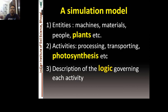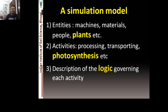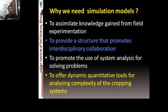What is the simulation model? A simulation model has three different parts. First, entities — these could be machines, materials, tables, plants, etc. Here I have deliberately included a plant because we are going to deal with actual crop systems. Second, activities — the processes such as photosynthesis and plant growth from emergence to harvesting. Third, description of the logic governing activities. A simulation model has all these three characteristics.